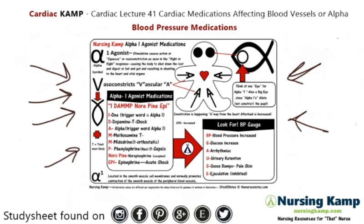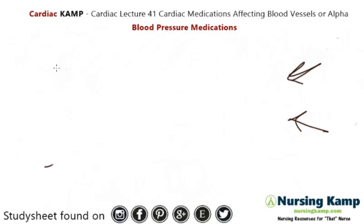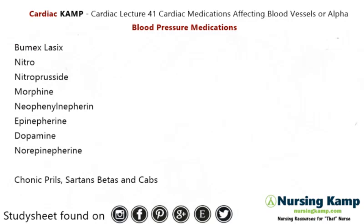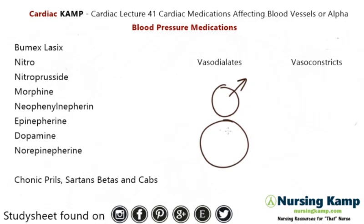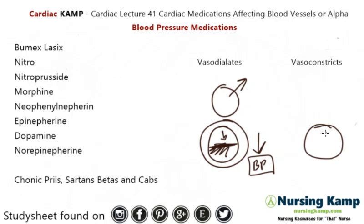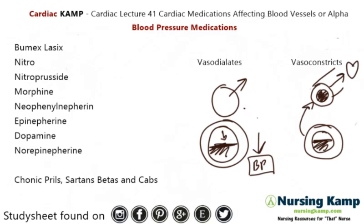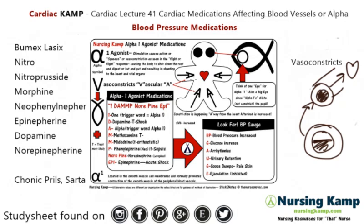Some basic things we need to know about cardiac medications that are going to affect blood pressure. When we're talking about blood pressure medications, we're talking about two different areas: vasodilation or vasoconstriction. Vasodilation is where the vessels actually increase, and if you vasodilate, the fluid goes down and therefore the blood pressure goes down. Conversely, if you have low volume, alpha will start to constrict to correct that volume. Vasoconstriction is used to increase blood flow back to the heart — alpha is away from the heart and it pushes it back.